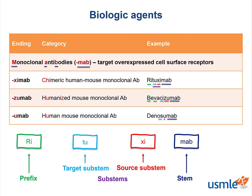Can you recall when we use denosumab? We use it for osteoporosis, which is why this may have been the one in our flash case that the patient heard about on a commercial. If you look up monoclonal antibody nomenclature, there are very helpful charts that help learn these drugs more efficiently than trying to memorize them individually. It's kind of a cool naming system.